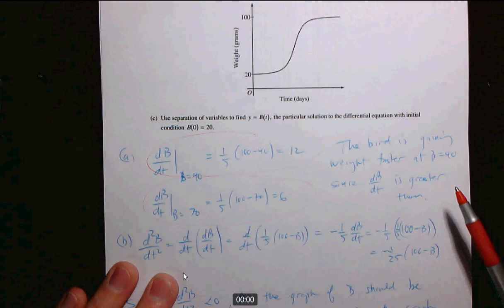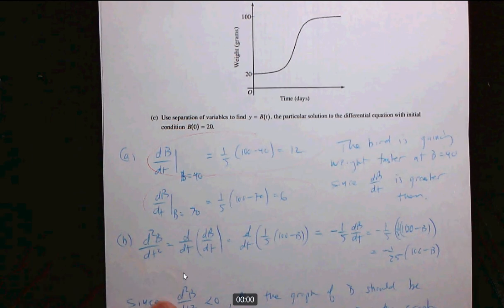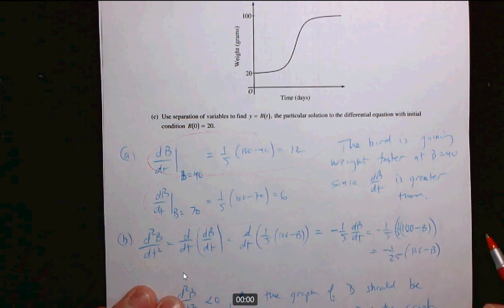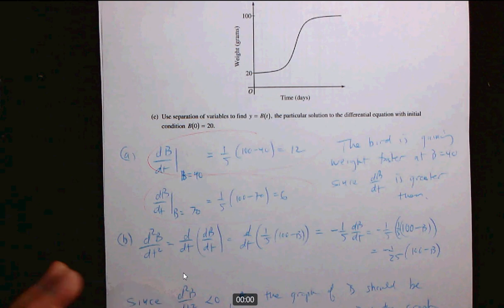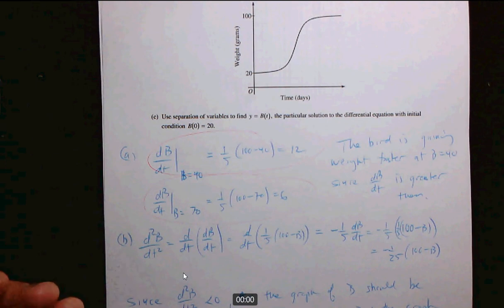Give a complete sentence answer and avoid use of the word it. Say the bird, the bird is gaining weight faster. Don't say it is faster at b equals 40. It is a word that will get you into trouble on the AP exam because it could refer to anything. Is it the weight of the bird? Is it the bird? Is it the rate of change of the weight of the bird?